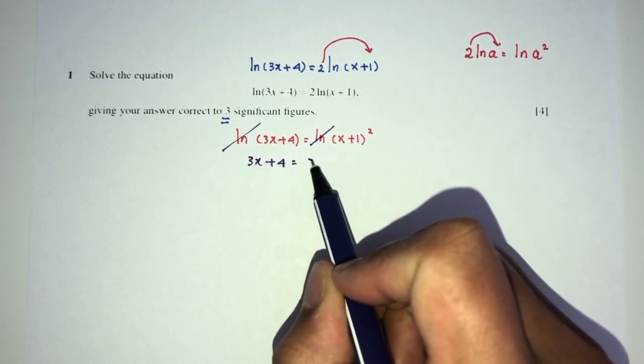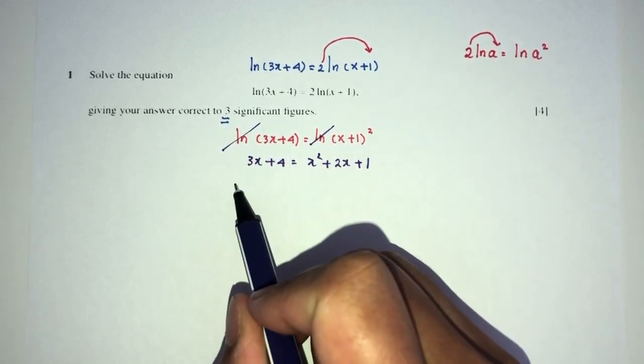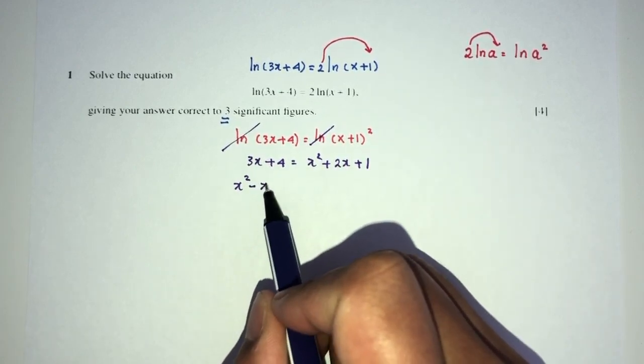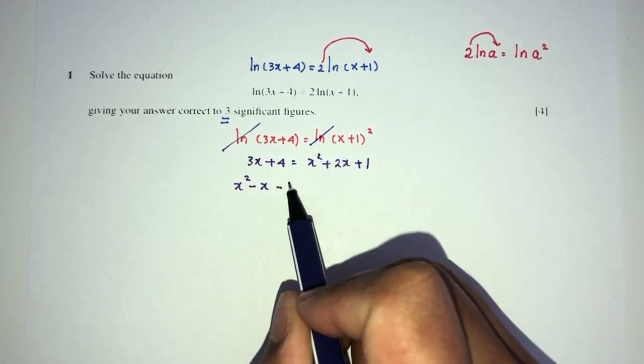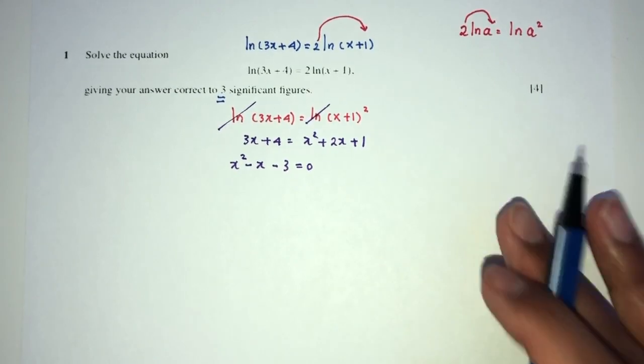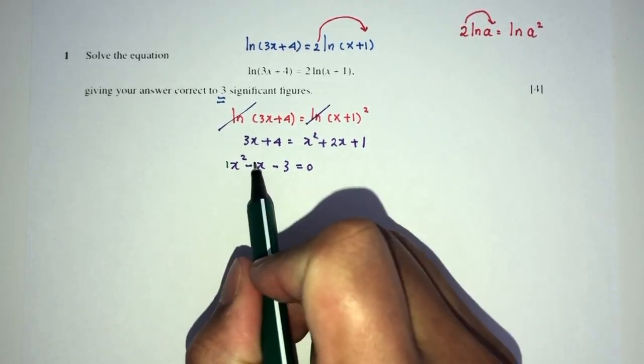Now I can have 3x + 4 equals x² + 2x + 1. Send everything to one side, you will have x² + 2 - 3 should be -x + 1 - 4 should be -3 equals 0. Now, if the question tells you to find the answer correct to 3 significant figures, you should know we can't factorize.